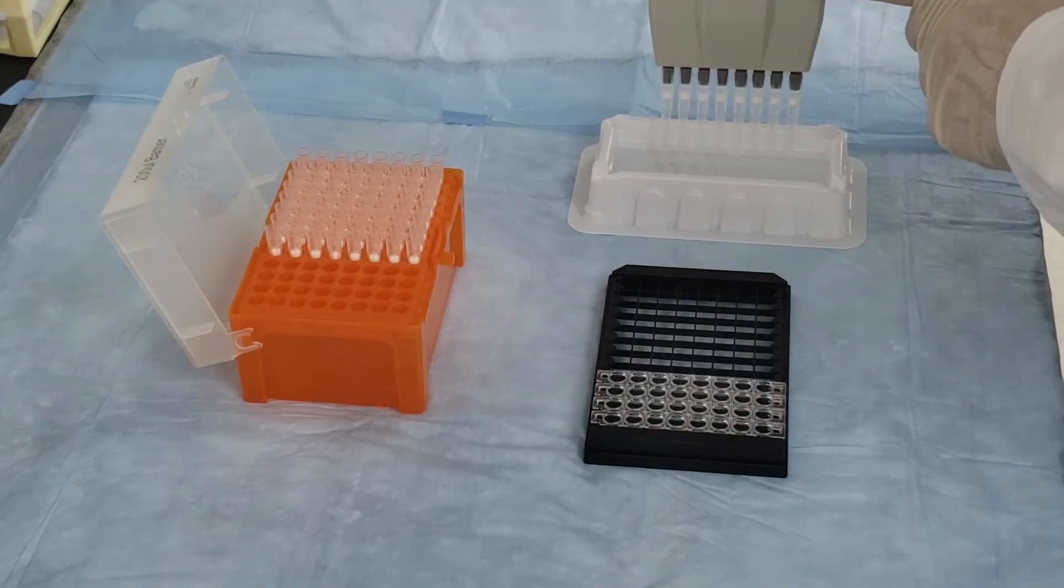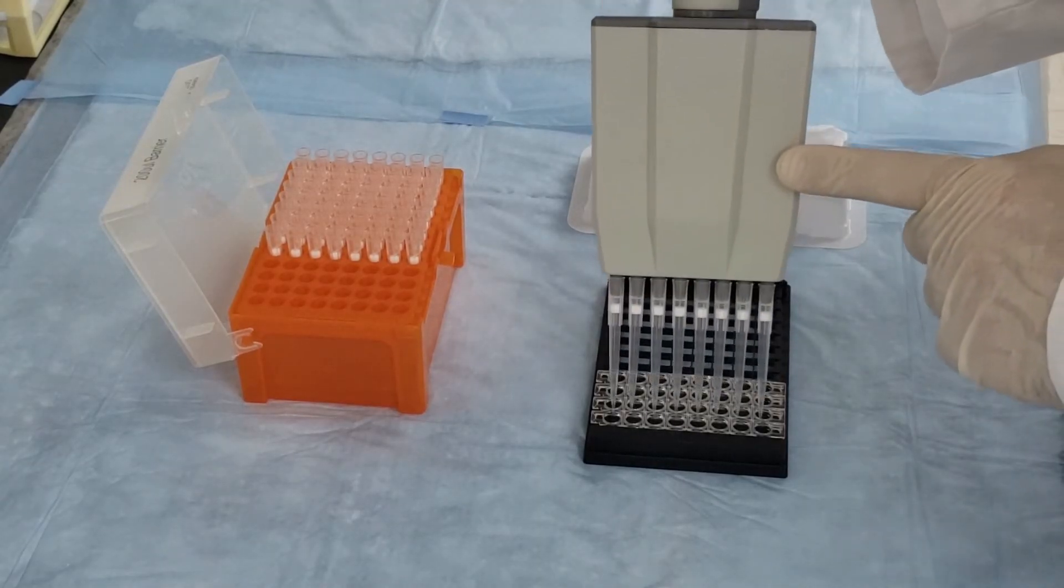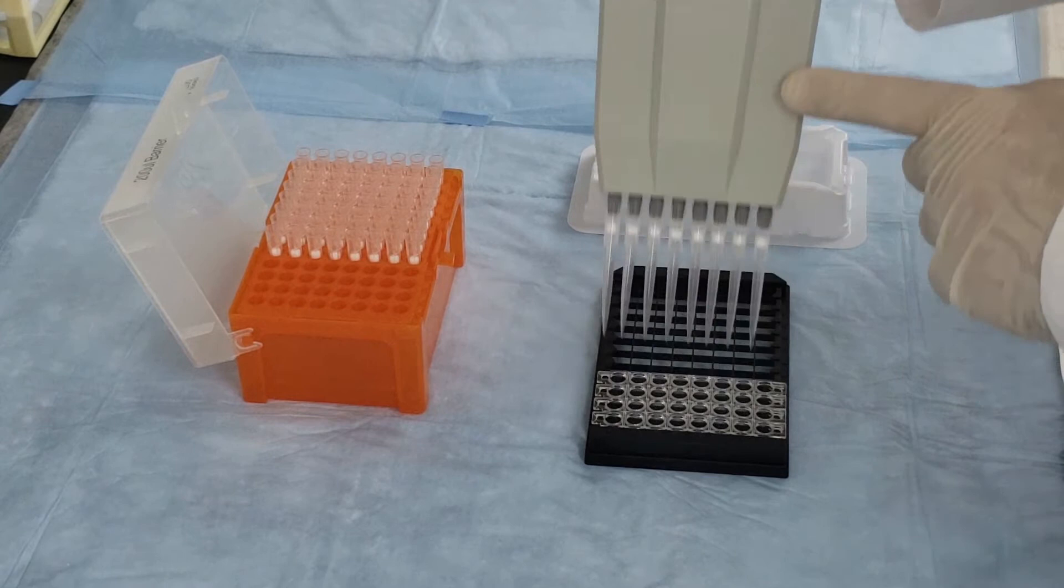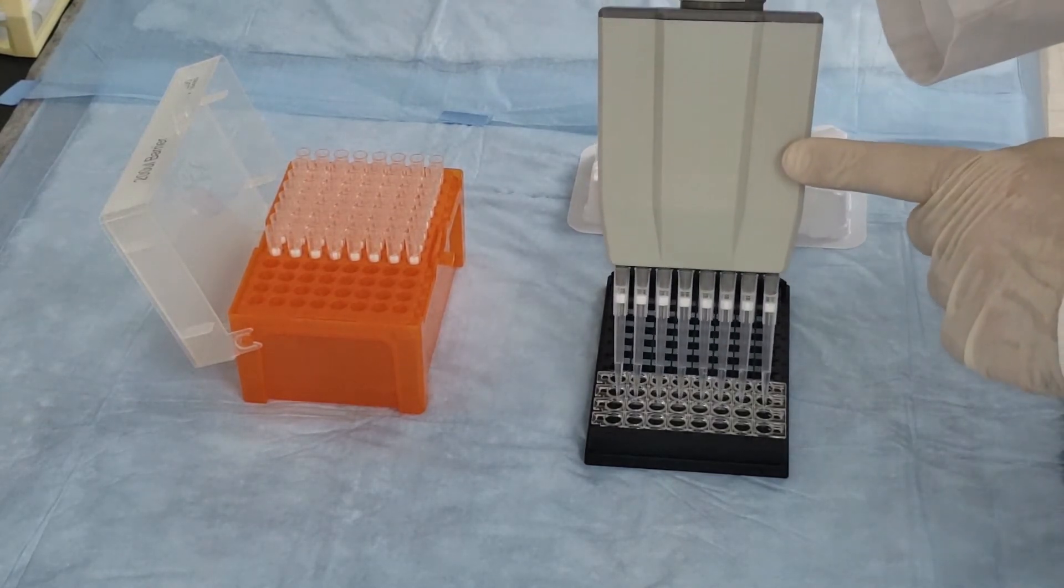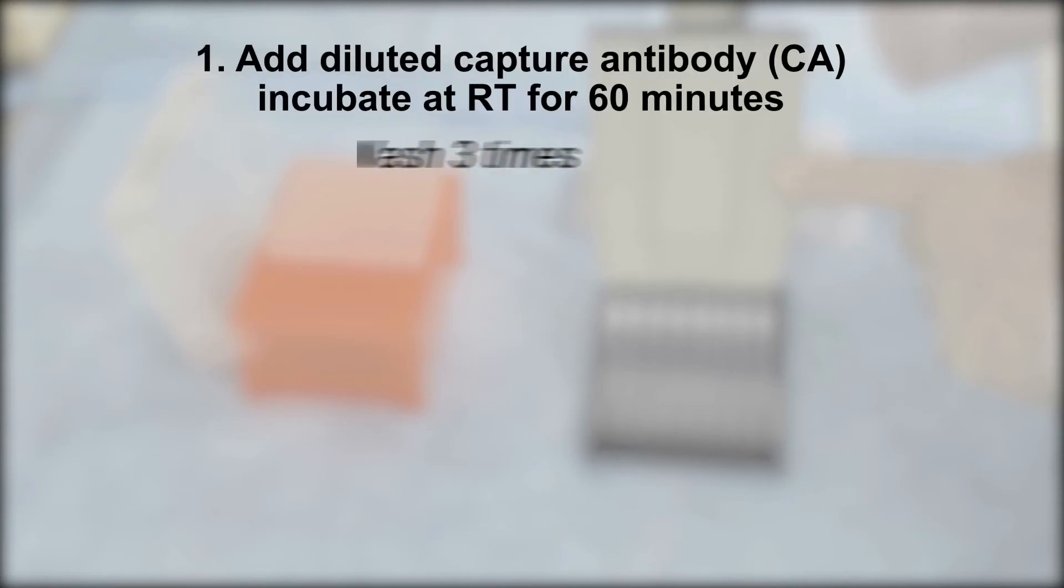For targeting M6A methylation on the bound RNA, the capture antibody, a detection antibody, and an enhancer are sequentially added and washed with diluted wash buffer. First, add diluted capture antibody to each well, washed three times.